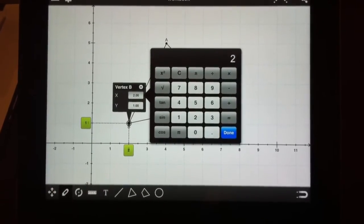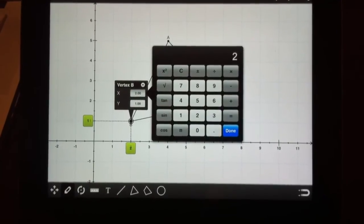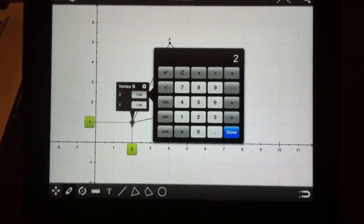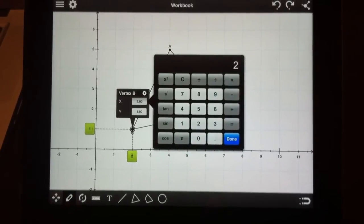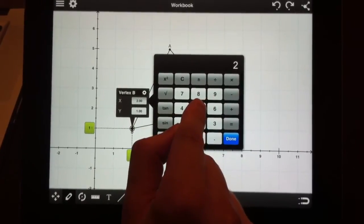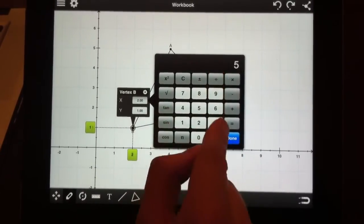It's very useful if you want to define a coordinate as a fraction or as a rational number. So let's say we want X to be 5 thirds. Let's input 5 divided by 3.